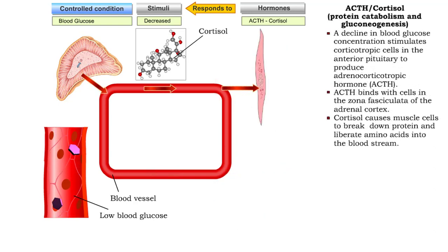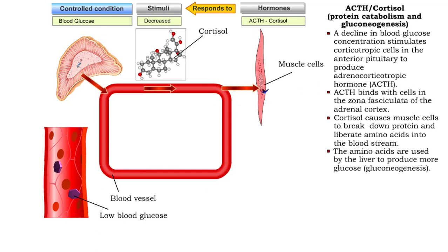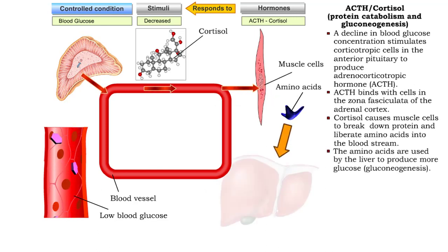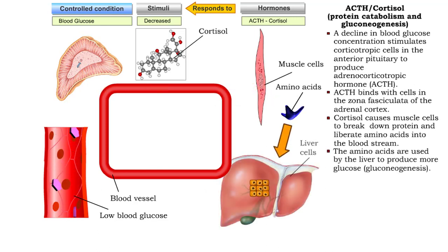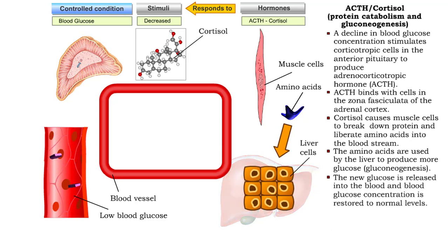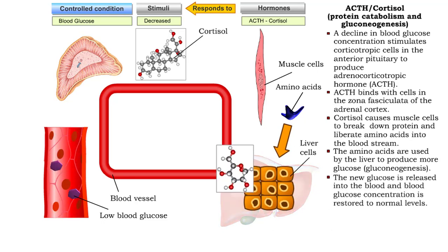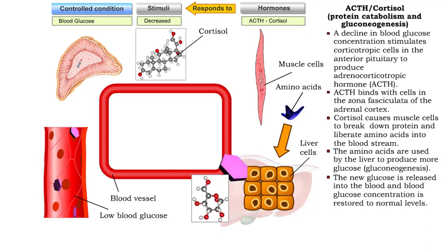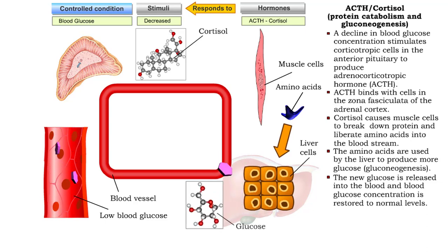Cortisol targets muscle cells and causes them to break down protein, thereby liberating amino acids into the bloodstream. The amino acids are used by the liver to produce more glucose, which is released into the blood and blood glucose concentration is restored to normal levels.